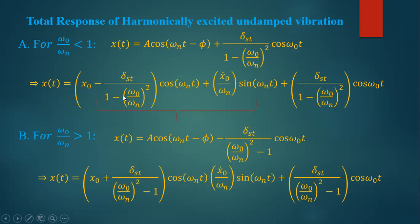The homogeneous solution, applying boundary conditions x naught and x naught dot, gives us this solution. We have discussed many things on this issue, so this is directly taken from the previous lecture. This is the homogeneous part of the solution after applying initial conditions: initial displacement x naught and initial velocity x naught dot. So we have this solution.